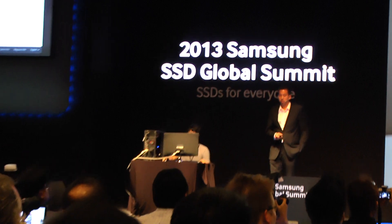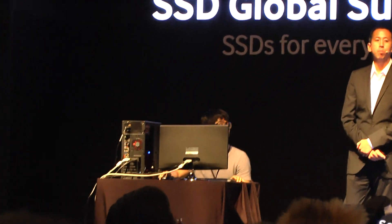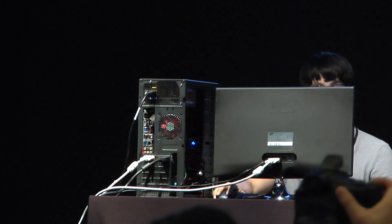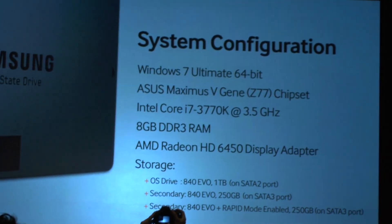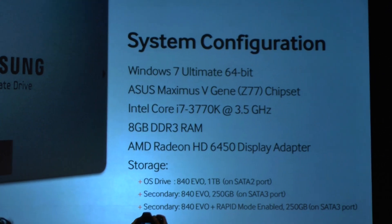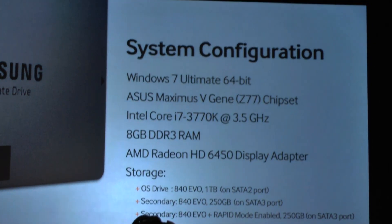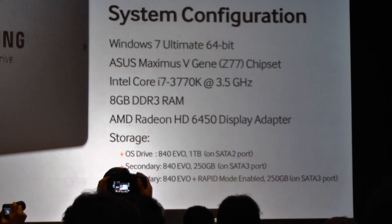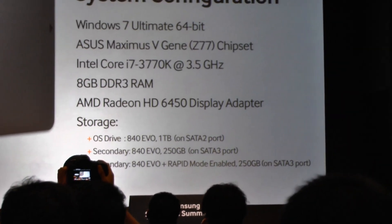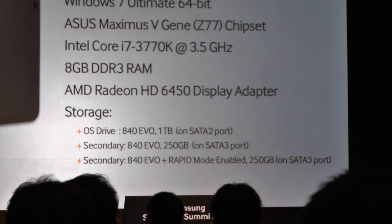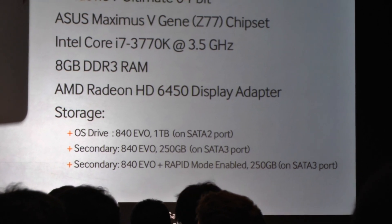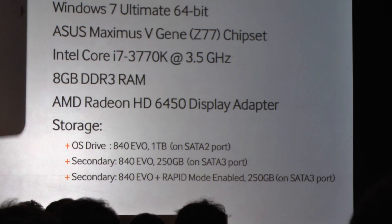Our system configuration is a desktop machine, which is a Z77 running Windows 7 Ultimate. Rapid will run on any Windows 7 or Windows 8 system. This configuration is using 8GB DRAM. And we've actually got three storage devices on this system — all of them are Samsung 840 EVOs.